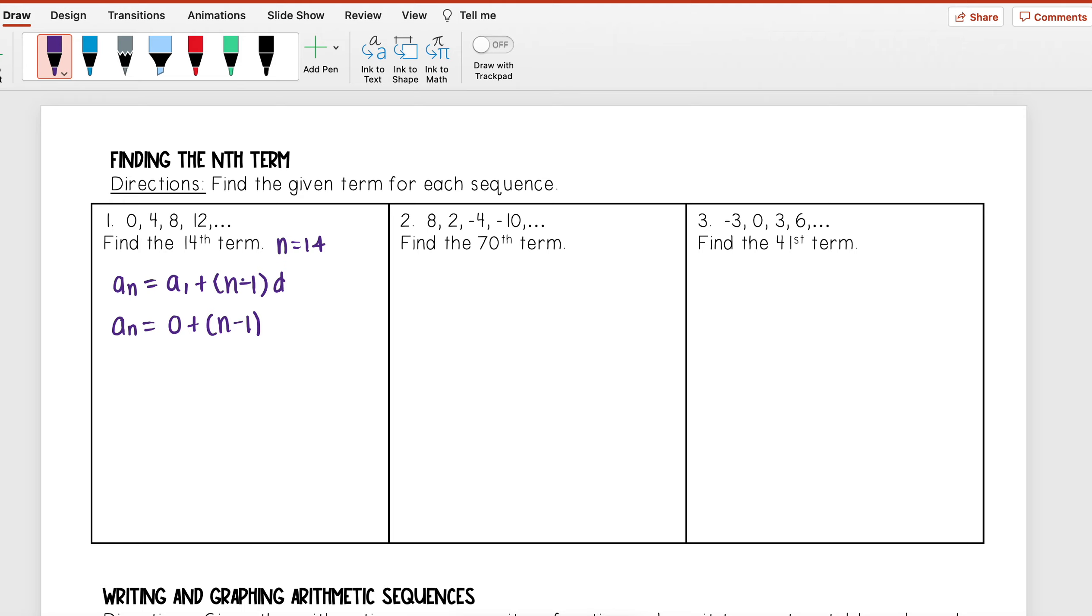And then I need to find what my common difference is, so I'm looking to see what I'm adding or subtracting each time. Well I see to get from 0 to 4 I need to add 4, 4 to 8 I add 4, and 8 to 12 I add 4. So that means my common difference here is 4.